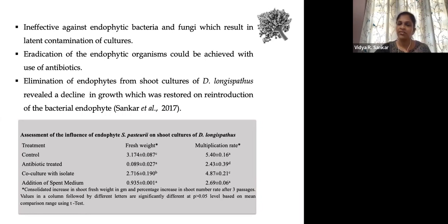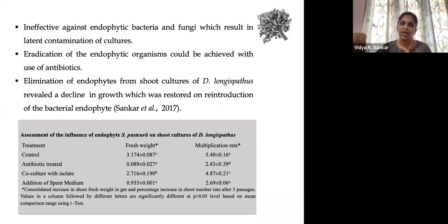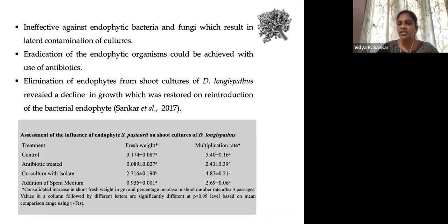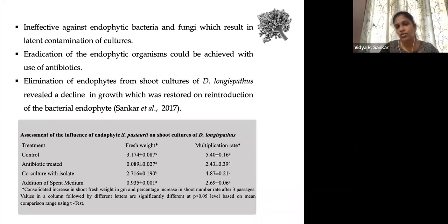We done two types of experiments. First, we co-cultured the shoot culture with the isolate. We inoculated the pure culture of Serratia marcescens into shoot cultures. We also cultured this bacteria in LB broth, extracted the filtrate, and added it to fresh media of shoot cultures. From both experiments, we found that when we inoculated bacteria into the shoot cultures, the biomass enhanced significantly, reaching 2.76 grams in the first subculture. The addition of the conditioned media also raised fresh biomass to 9.35 grams from 0.089 grams.